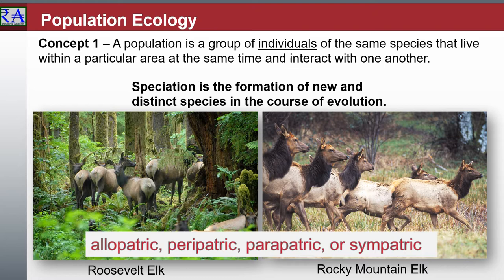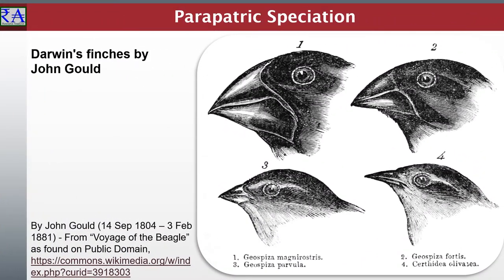Speciation occurs when biological populations of the same species become isolated from each other, to an extent that prevents or interferes with gene flow. The separated populations develop adaptive responses to their restrictive environments. We look for examples to prove it. In peripatric speciation, one population bifurcates into two subpopulations of a species, evolving in reproductive isolation from one another, while continuing to exchange genes.